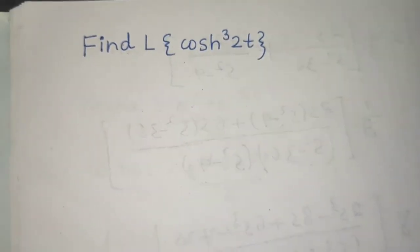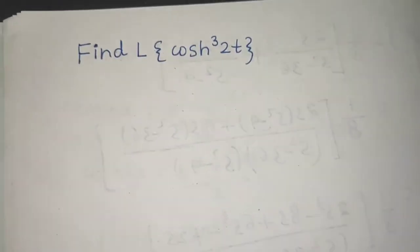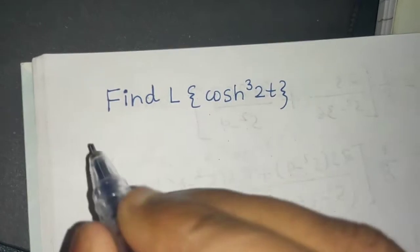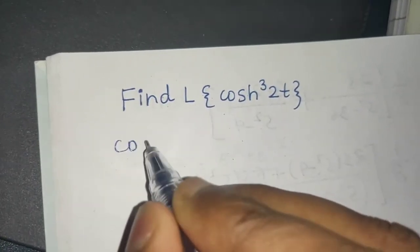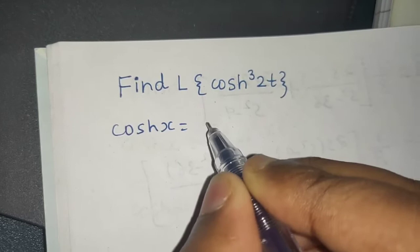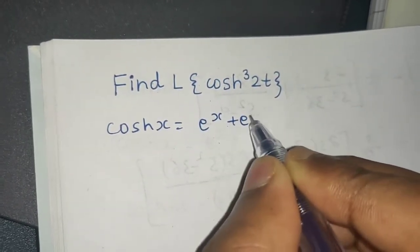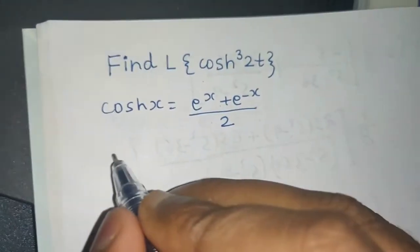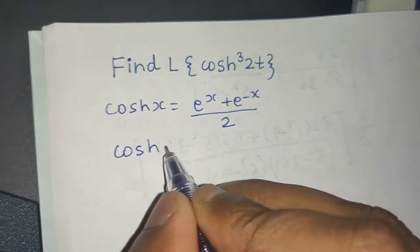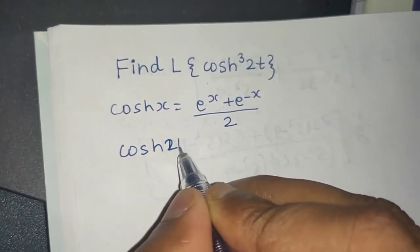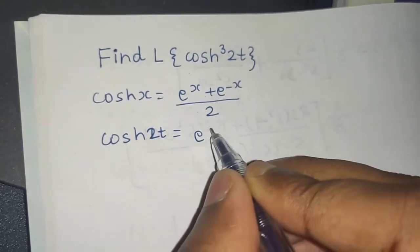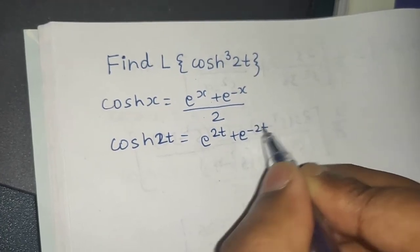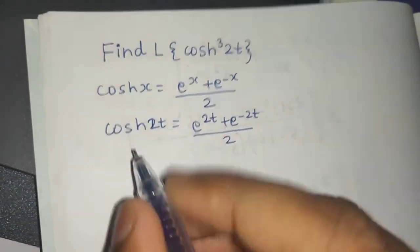Let us look at a problem from Laplace transform. We need to find the Laplace of cosh cube 2t. We know that cosh of x equals e power x plus e power minus x divided by 2. Similarly, cosh of 2t will be e power 2t plus e power minus 2t divided by 2.